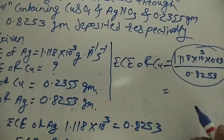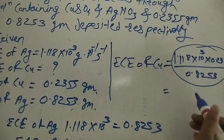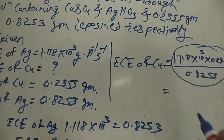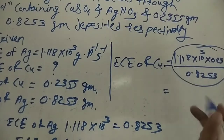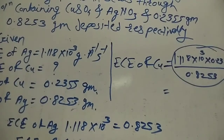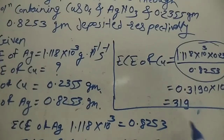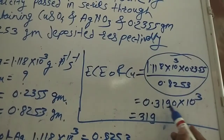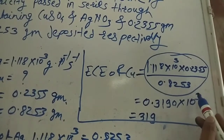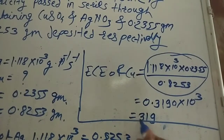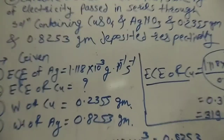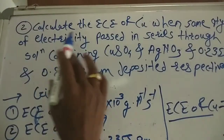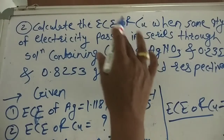After solving this equation using cross multiplication, we get 0.3190 × 10³. Converting this, the final electrochemical equivalence of copper is 3190. This is how we calculate the electrochemical equivalence of any metal.